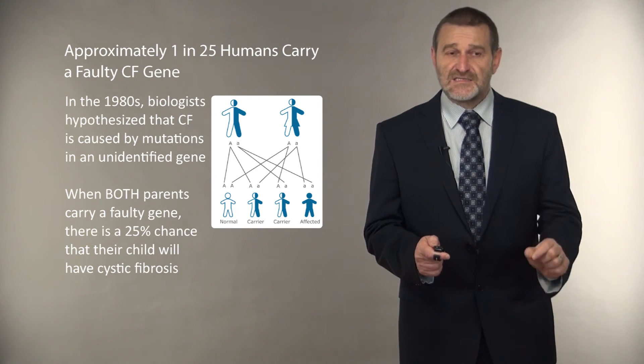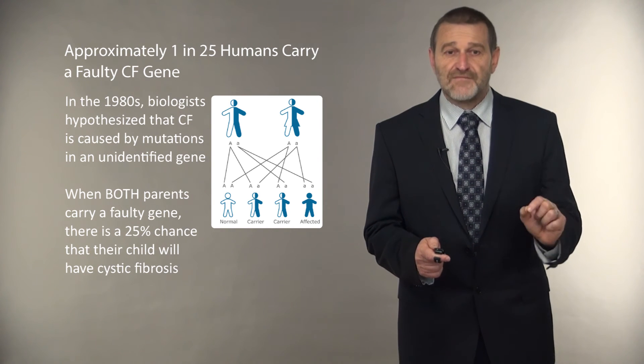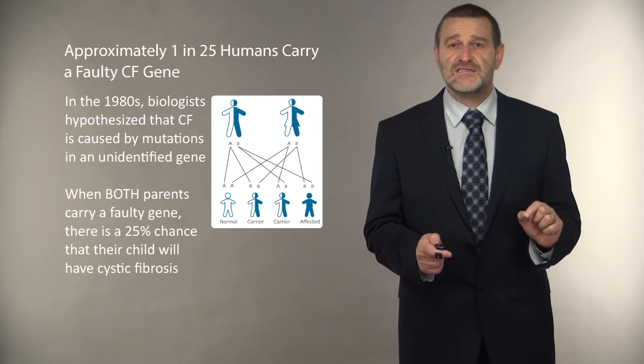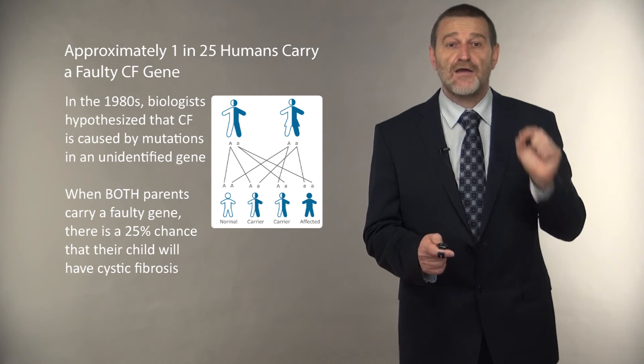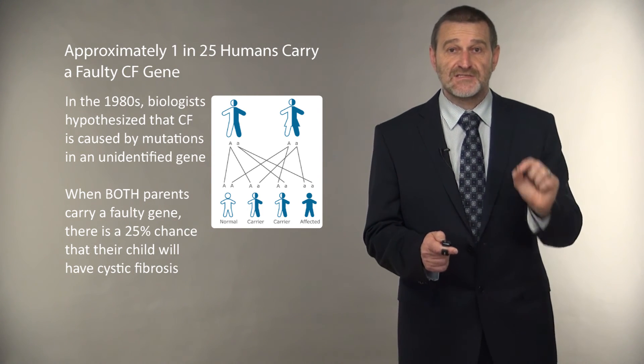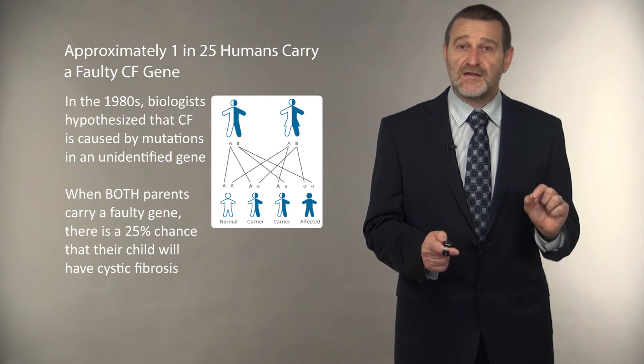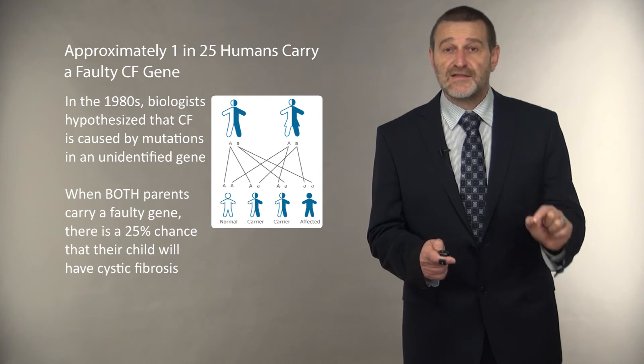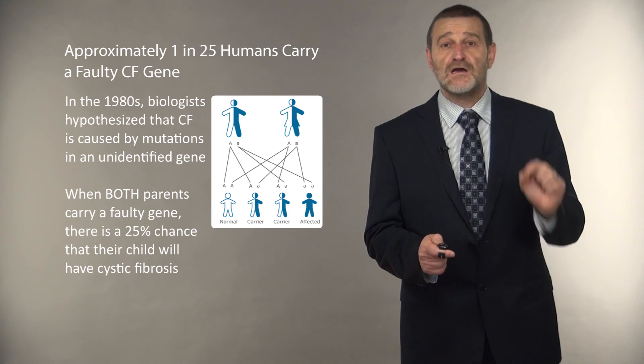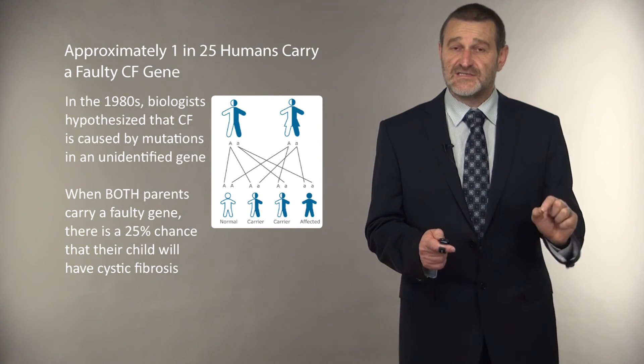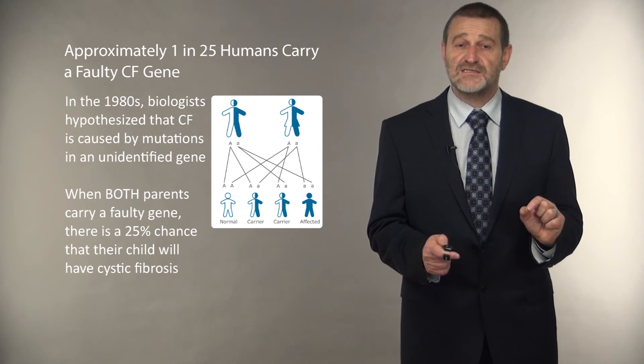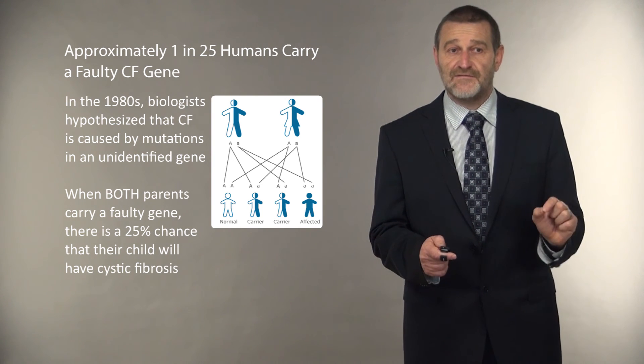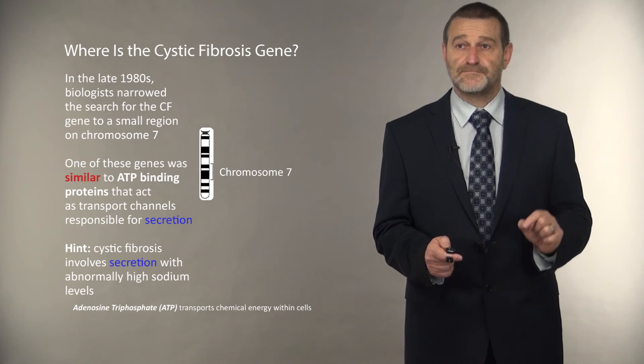Cystic fibrosis is a rather frequent genetic disease. In the United States, one in 25 people carries a faulty cystic fibrosis gene. It doesn't mean that they have cystic fibrosis. But if two people with faulty cystic fibrosis genes have a child, there is a 25% chance that the child will have cystic fibrosis.